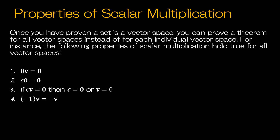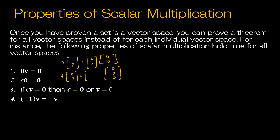Here are four properties of scalar multiplication that are true for all vector spaces. First, zero times any vector gives the zero vector. Second, C times the zero vector gives the zero vector — for instance, three times the zero matrix is still the zero matrix. Third, if the product of two items is zero, then at least one of those items must be zero. Fourth, negative one times a vector gives the negation of that vector.